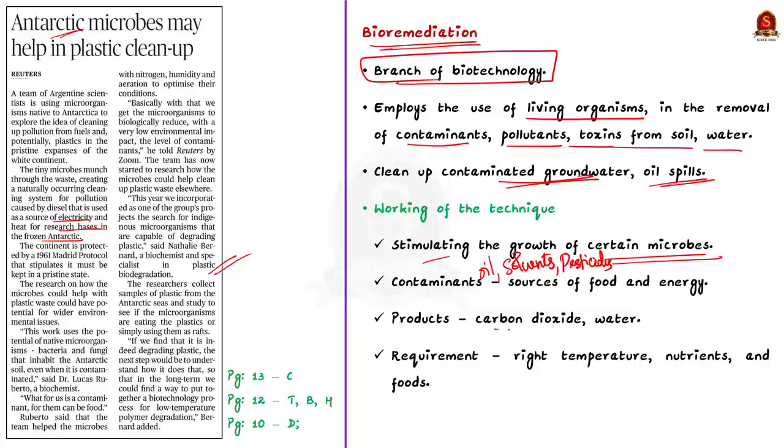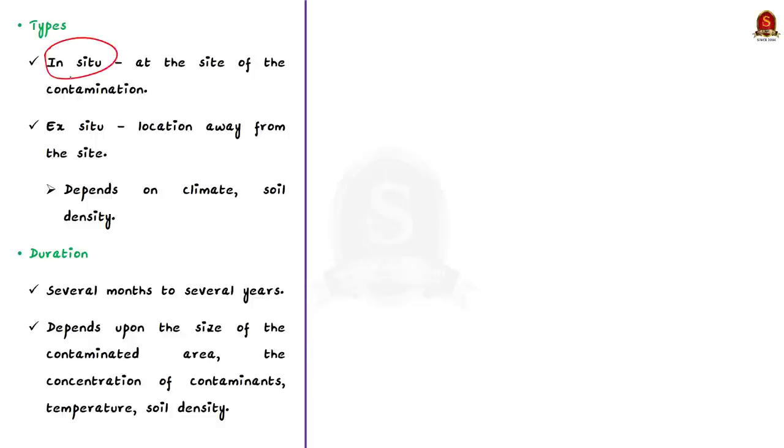And it also requires a combination of right temperature, nutrients, and foods. The absence of these elements may extend the time of cleanup of the contaminants using bioremediation. Now, let us see how bioremediation can be done. Bioremediation can be done in two ways. They are in situ which is at the site of contamination itself and ex situ which is a location away from the site. Ex situ bioremediation may be necessary if the climate is too cold to sustain microbe activity or if the soil is too dense for nutrients to distribute evenly. Ex situ bioremediation may require excavating and cleaning the soil above ground which may add significant cost to the process.